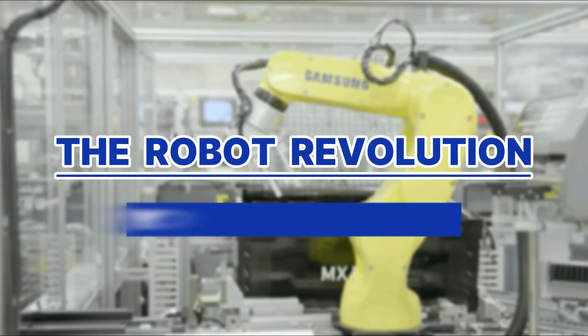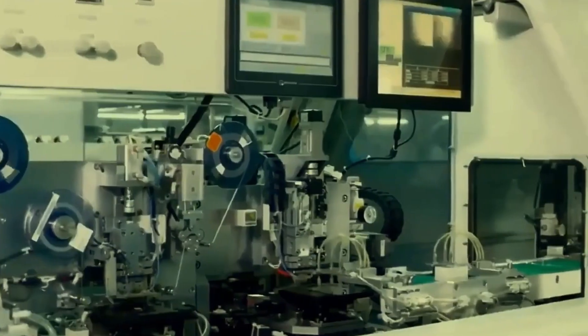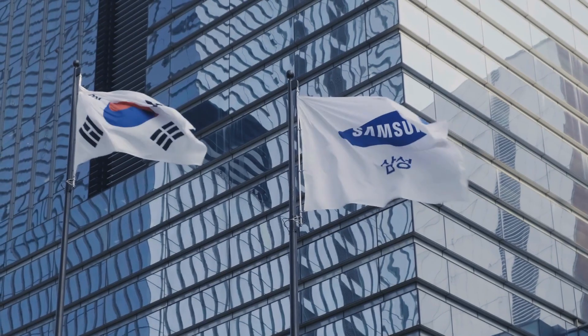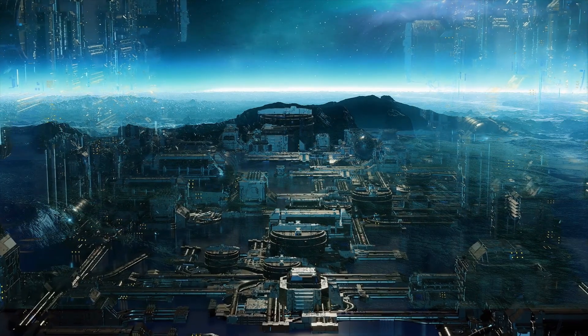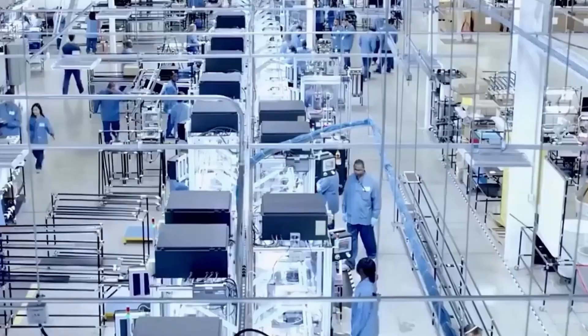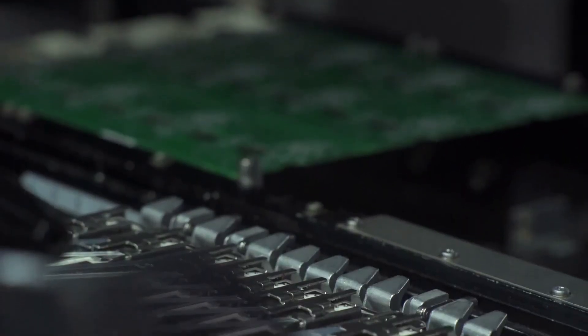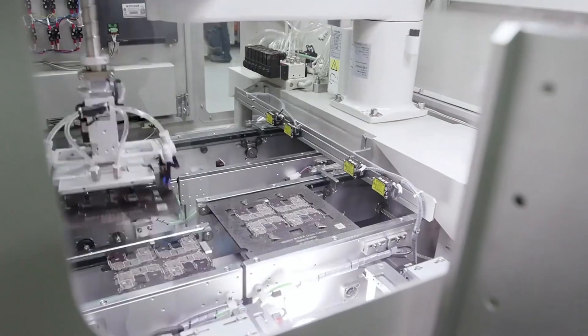Here's where it gets absolutely mind-blowing. Walk into Samsung's Gumi factory in South Korea, and you'll witness something that looks like it's straight out of a sci-fi movie. Picture this. 9 out of 13 production lines are completely automated. We're not talking about a few robotic arms here and there. We're talking about a full-scale robot takeover.